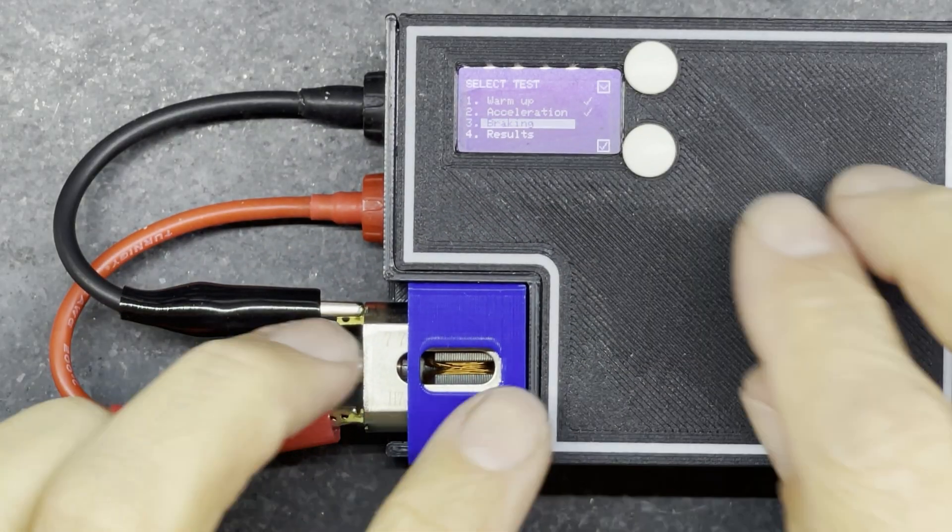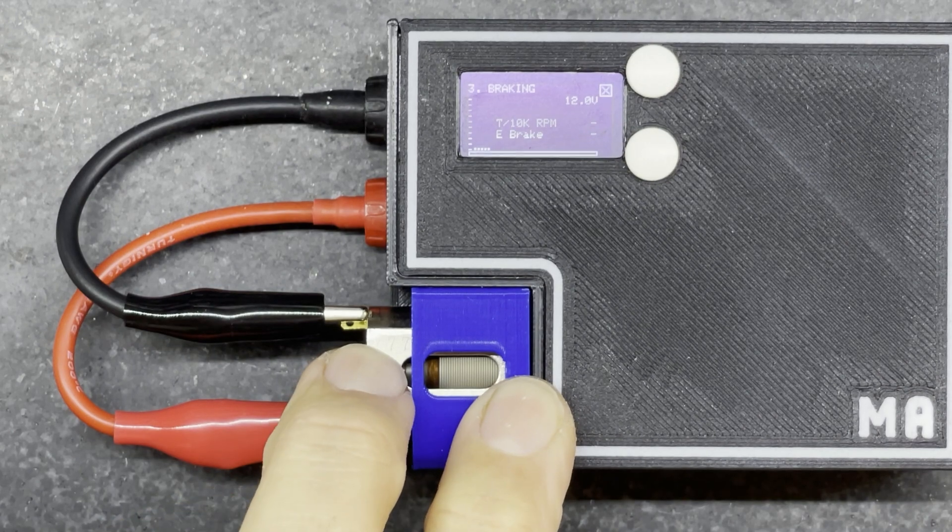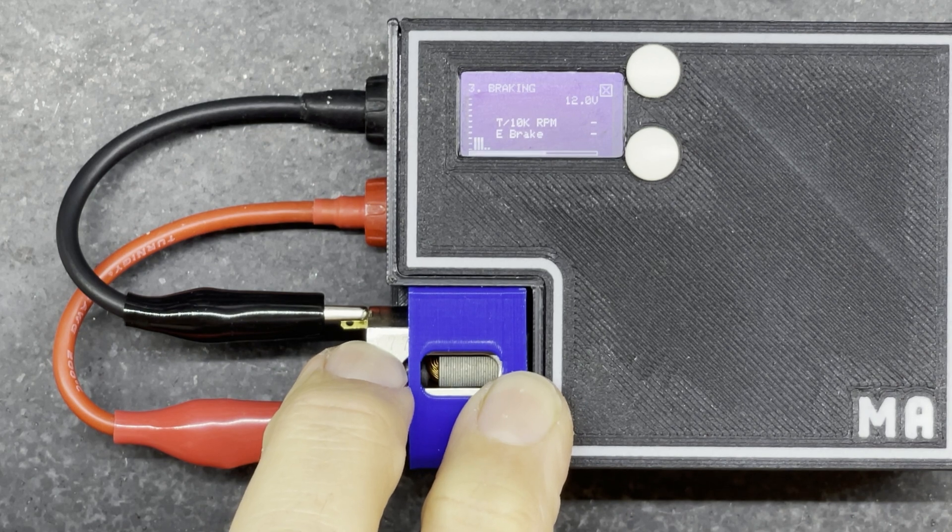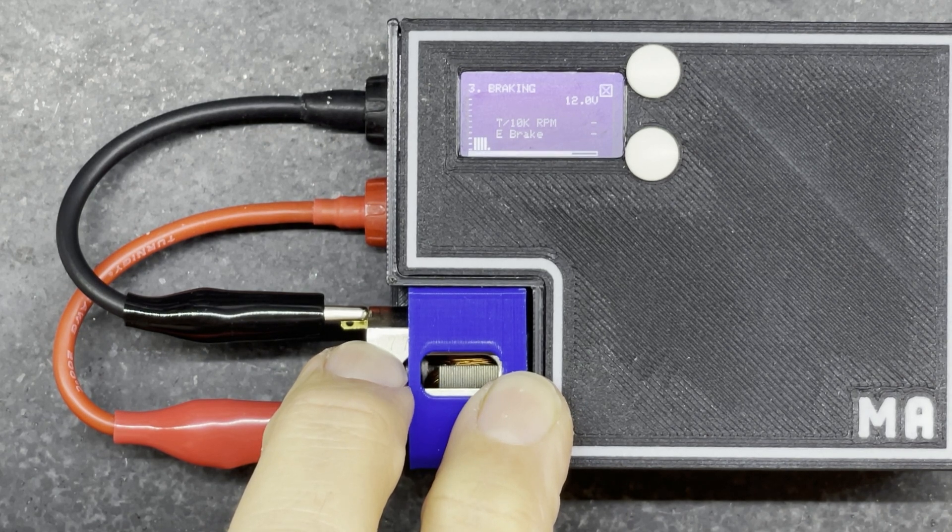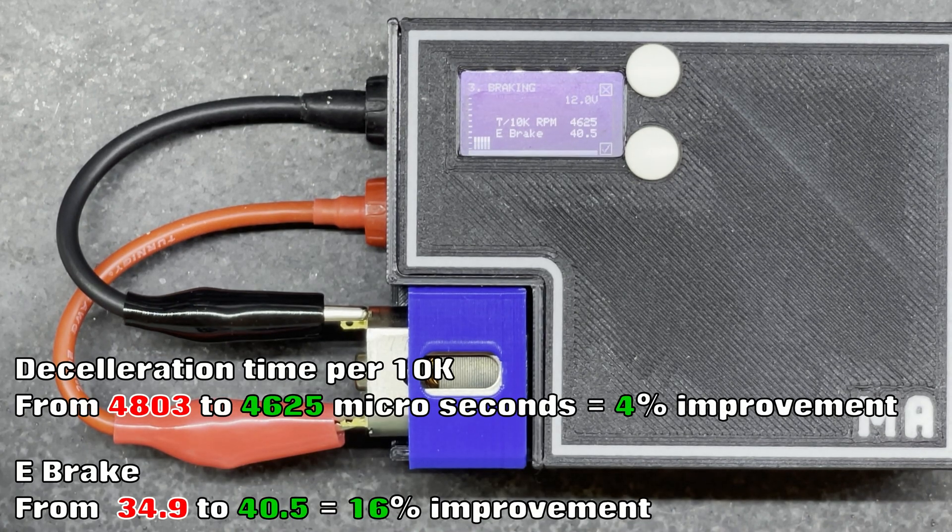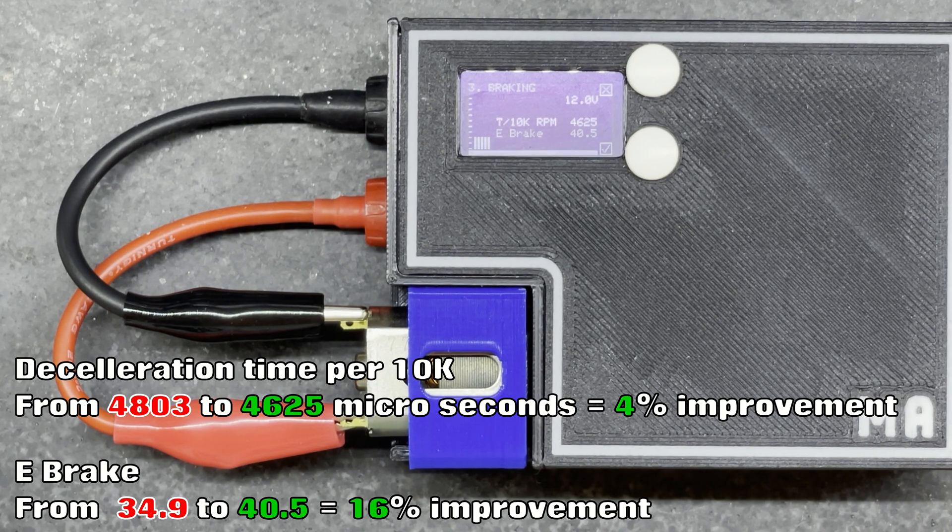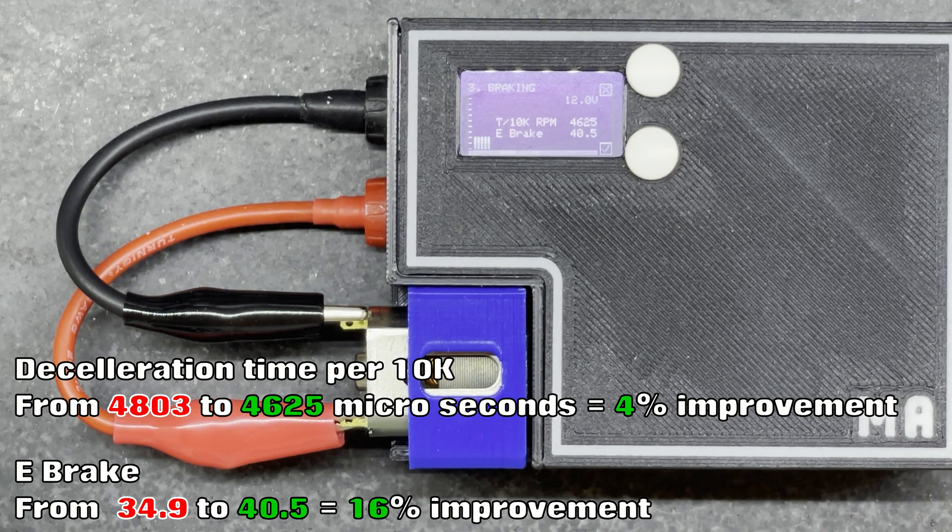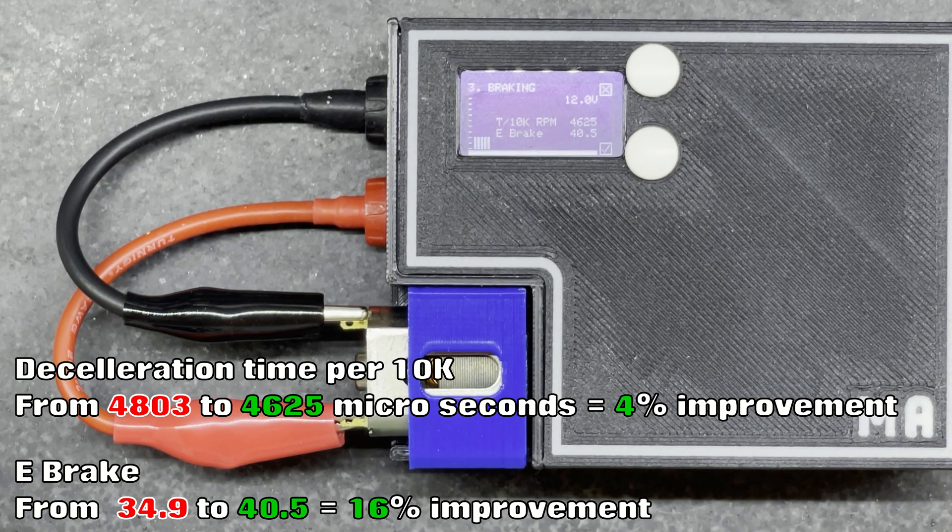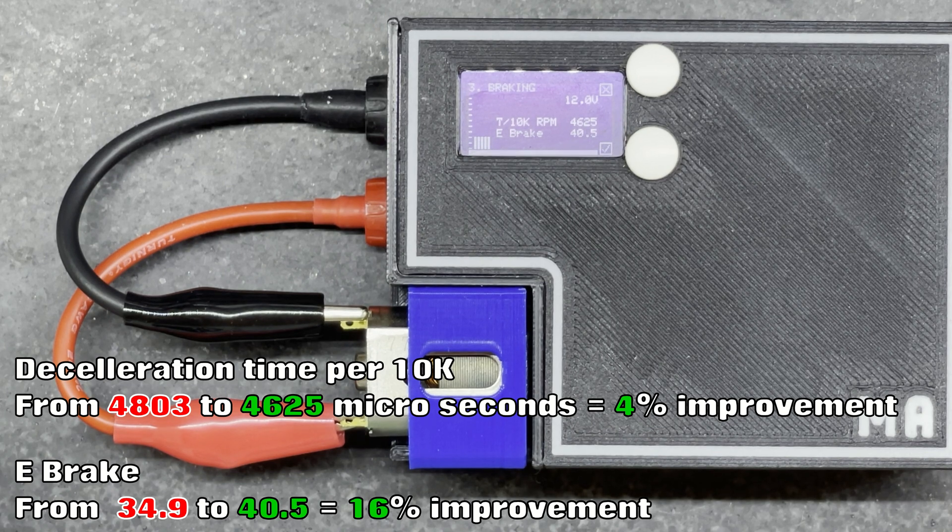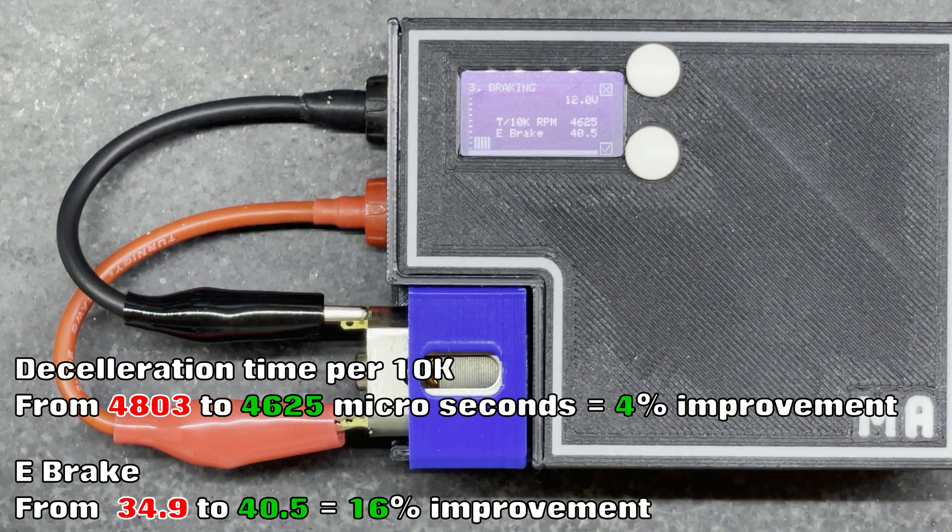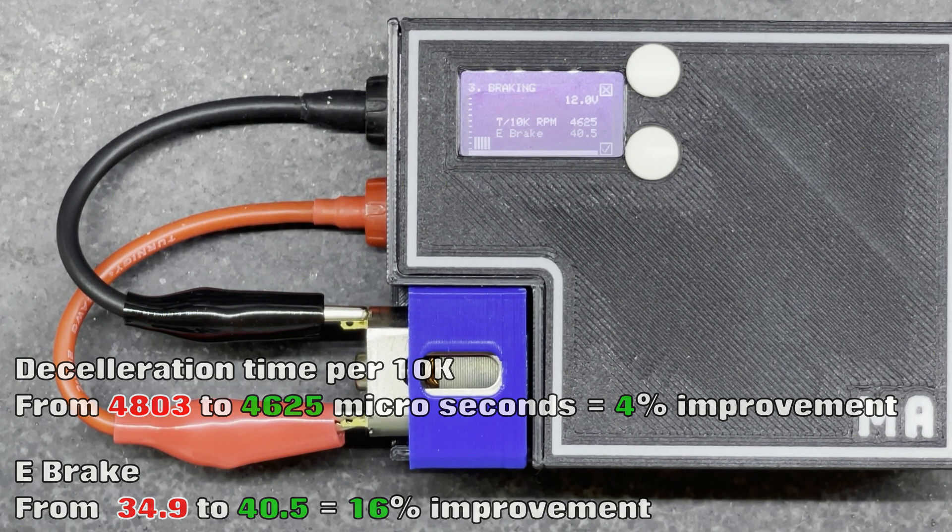On to the braking test. So that's a huge improvement on the braking test. We've gone from 4803 microseconds to decelerate per 10,000 RPM to 4625, and we've increased the e-brake performance from 34.9 up to 40.5. So basically I'm expecting a better braking performance from this motor now as well.